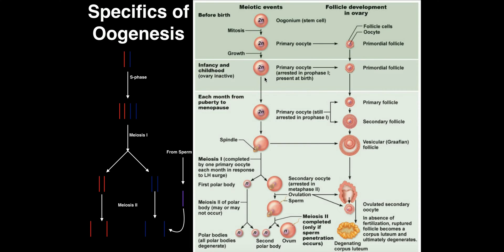What's going to happen initially is we start meiosis one. Remember, meiosis has two stages — meiosis one and meiosis two — with phases named like mitosis: prophase one, metaphase one, anaphase one, and telophase one (and the same for meiosis two). In infancy and childhood, we start meiosis one but only get through the first stage, and not even all the way through it. We have what's called a primary oocyte that gets arrested — halted — in prophase one. It's kind of like being stuck in a traffic jam.